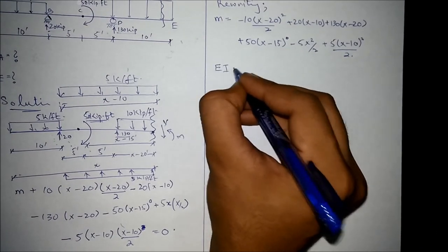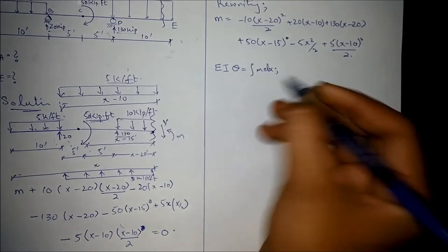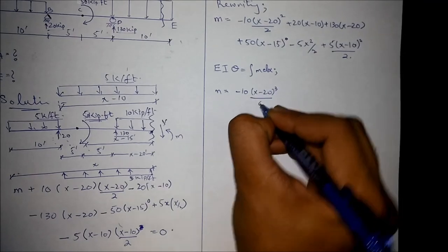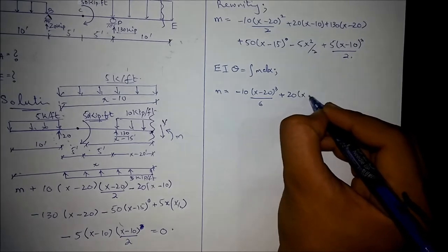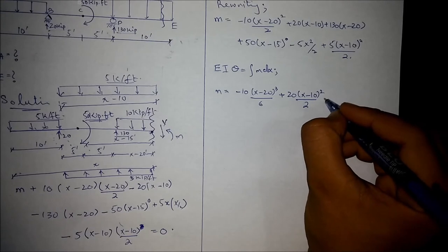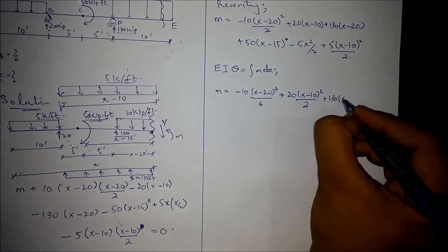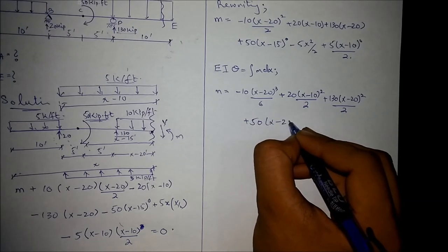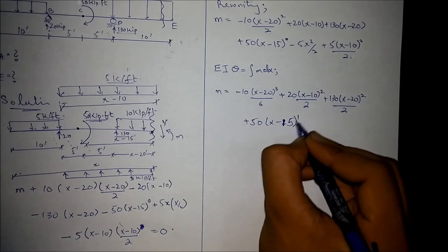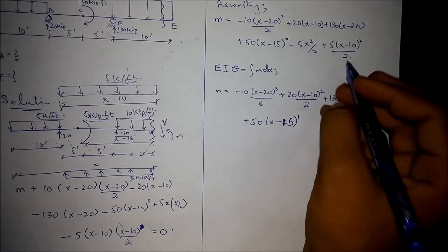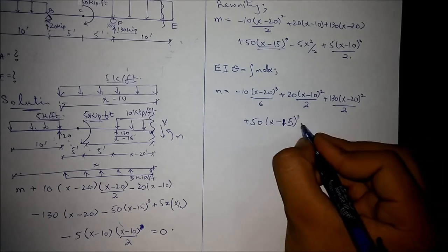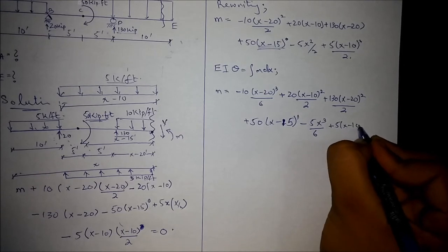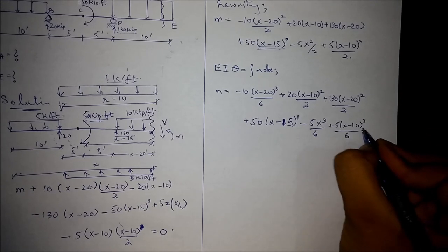Integrating the moment equation once yields the rotation equation EI·θ: = −10(X−20)³/6 + 20(X−10)²/2 + 130(X−20)²/2 + 50(X−15)¹/1 − 5X³/6 + 5(X−10)³/6 + C1. It is important to note that after integration the power becomes 1, which was the reason for including the lever arm for the moment term.